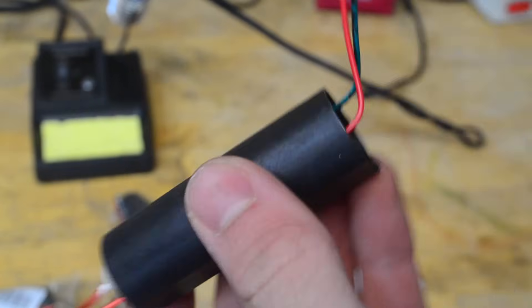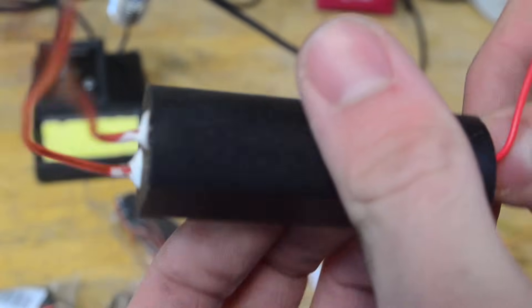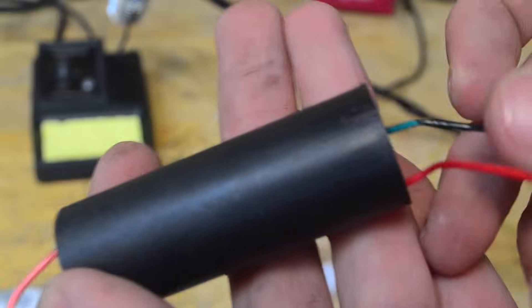These boost converters are rated for 3-6 volts DC on the input. However, in this video we're going to be using a 9-volt battery, and I'll show why we can do that without burning it out later on.